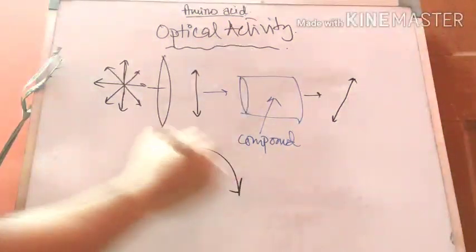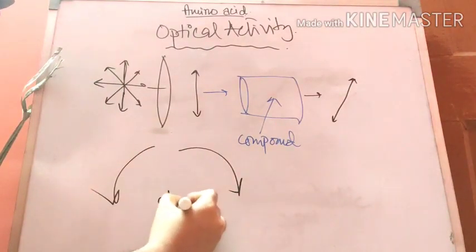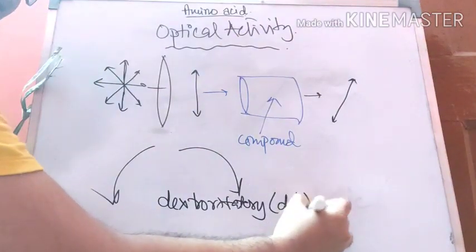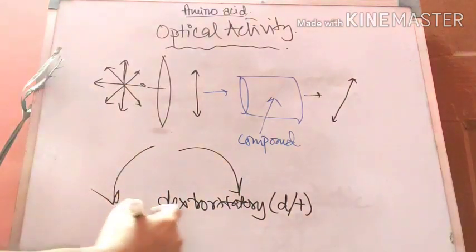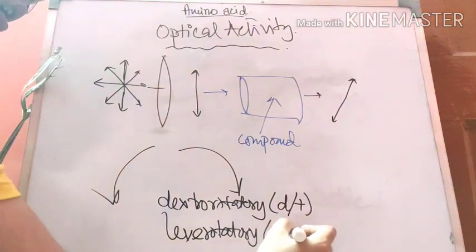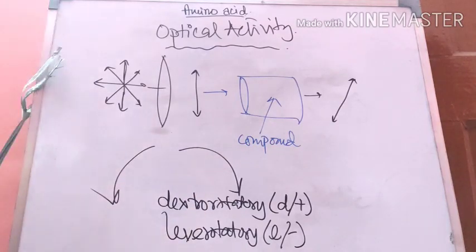This rotation can be either clockwise or counterclockwise. If the rotation of the plane is clockwise, the molecule or amino acid will be known as dextrorotatory. If the rotation is counterclockwise, it is levorotatory — that is denoted as L or minus. Never get confused with the capital D or L, which we will discuss later. So these are the dextrorotatory and levorotatory optical properties of amino acids.